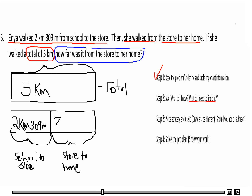We used a tape diagram, so now we need to decide: should I add or subtract? If I added the two known numbers, that would give me more than my total — something like 7 kilometers 309 meters — which is more than the total distance. So obviously, looking at that, I need to subtract. I need to subtract 2 kilometers 309 meters from 5 kilometers.